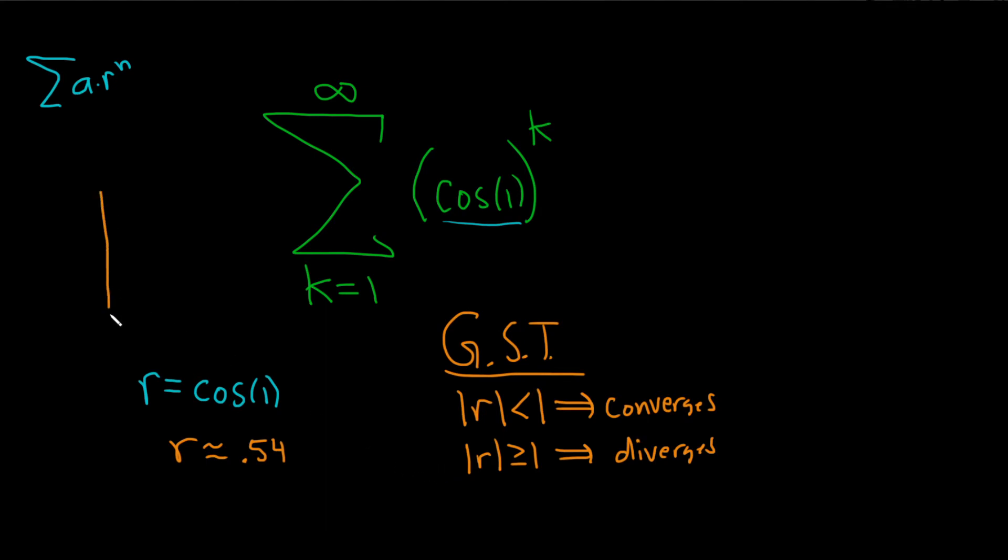Also, you can think of it graphically. Let's think about the graph of cosine. Cosine of 0 is 1, and then cosine of pi over 2 is 0. It looks like that.